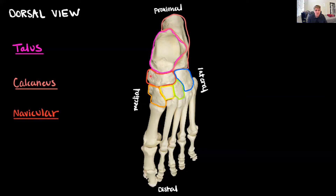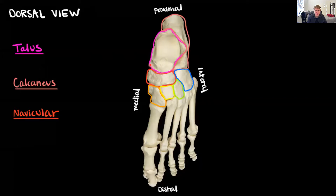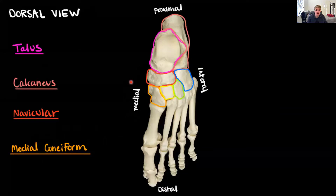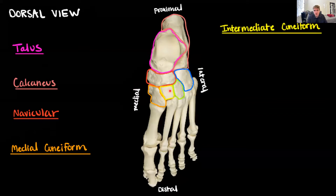The next bone is the navicular, highlighted in red. Navicular actually means 'little ship,' and it kind of looks like a little rowboat. From this view, the talus looks like it's riding in the ship of the navicular. The next three bones all share the same base name but we use orientation terminology to distinguish them: the medial cuneiform in orange is the most medial; next is the intermediate or middle cuneiform; and after that the lateral cuneiform, which is the most lateral.